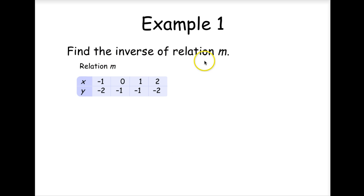Find the inverse of relation m. So we're given x and y coordinates of this relation. To find the inverse, all you simply do is interchange the x and y columns. So what was a y is now an x. What was an x is now the y. You just flip each ordered pair. Pretty simple.